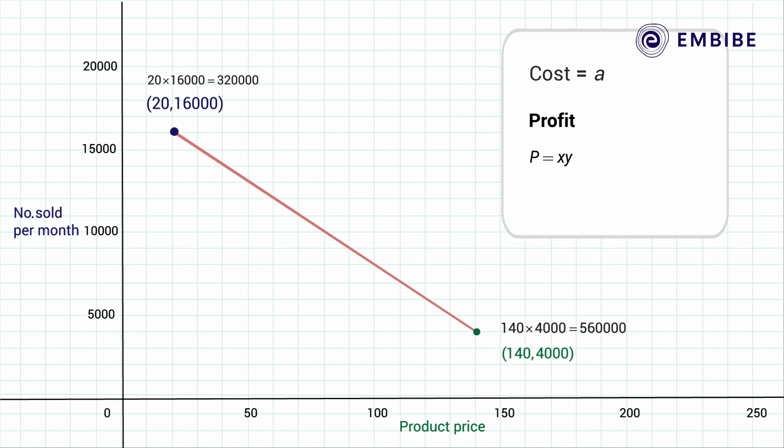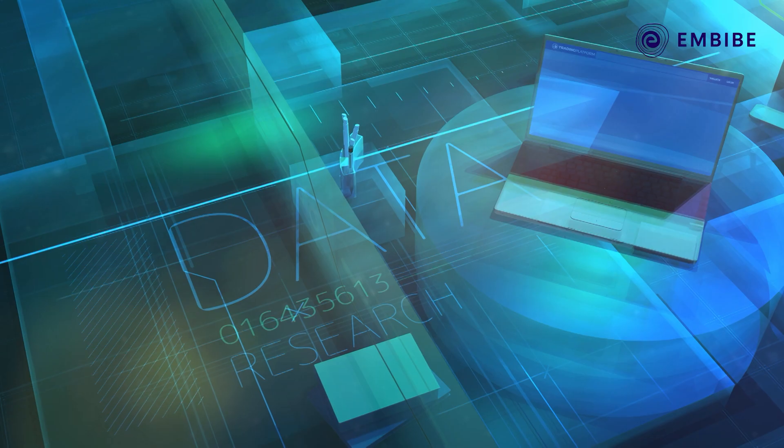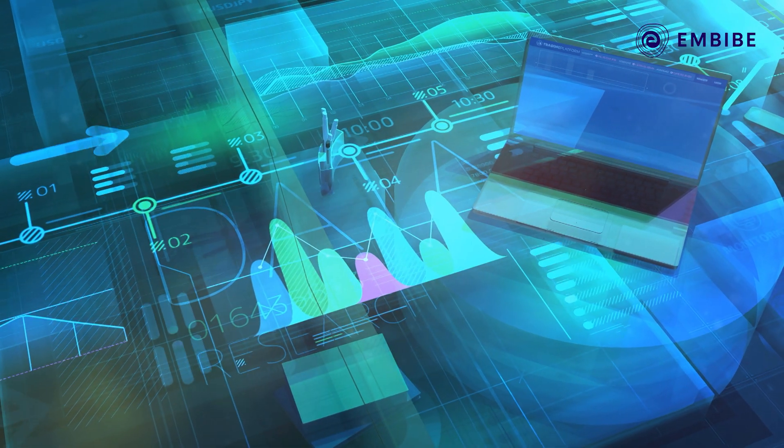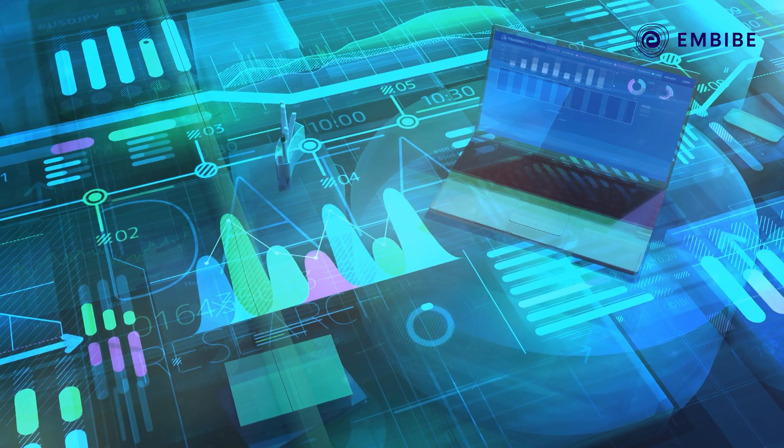If the production cost of each product is a, then the profit is P equals xy minus ay. You get P equals mx squared plus (b minus a)mx minus ab. The equation might look ugly, but it's really just a quadratic equation.